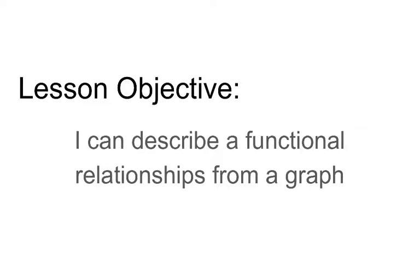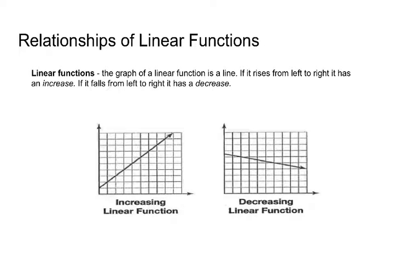This video is going to be a bunch of examples and give you some ideas on how to describe functional relationships when you look at a graph. But the truth is, every graph is a little bit different, and you really just have to be able to look at it, make sense of it, understand the x and y-axis, and then describe what you see. There are two different types of relationships: relationships for linear functions and relationships for non-linear functions.